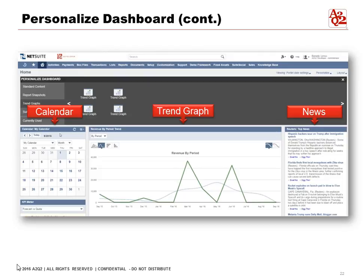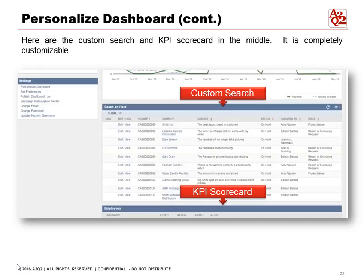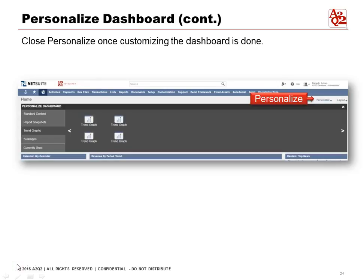Now we've added all of our portlets. We can fix the layout — we can move the news to the right side, leave the revenue by period trend graph in the middle, and since the calendar is important to us, put it on the top left. Now we can see the calendar on the left, the graph in the middle, and the news on the right. If we scroll down, here are the custom searches and the KPI Scorecard in the middle. It's completely customizable. Once we've completed all of our portlets and customized how we want to see our dashboard, we can close the Personalize menu on the upper right. And now we're done.